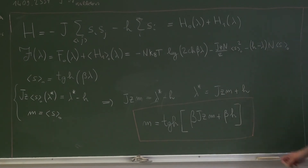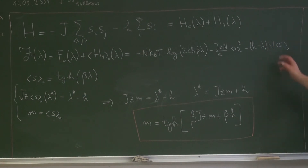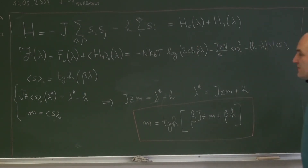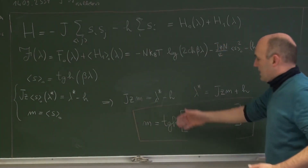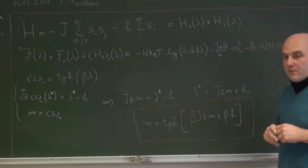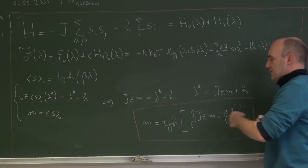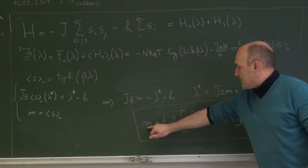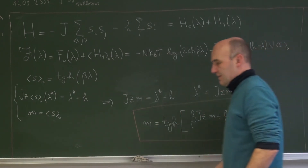This is the result of the Bogoliubov inequality calculations. We started from splitting the Hamiltonian into two parts, we have done all the calculations, we calculated the variational free energy, we optimized this free energy with respect to parameter λ, and the optimization has given us the equation for S naught. Combining these two equations, I get the result that the magnetization in the Ising model, in this Bogoliubov approximation, is a function of itself: M appears on both sides. This is what we have to solve next, and that will be done in the next video. Thank you.